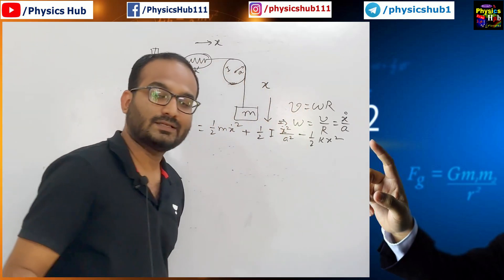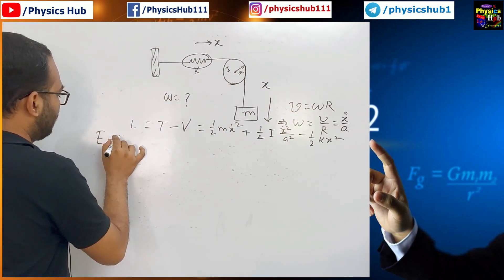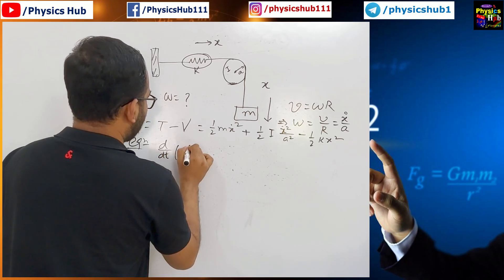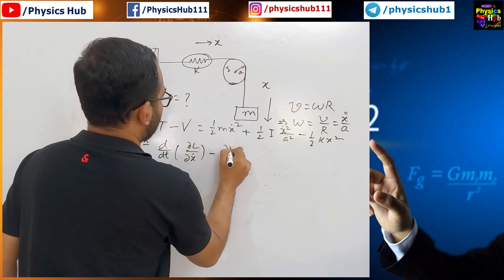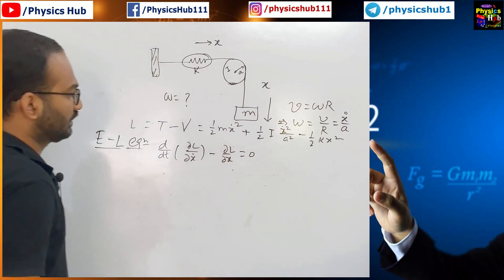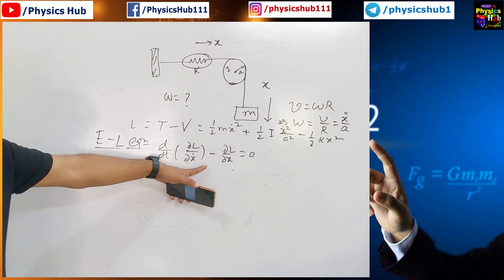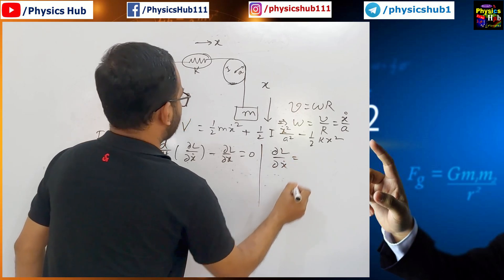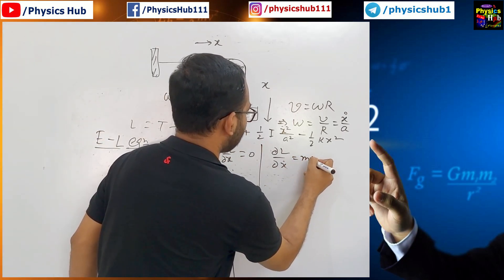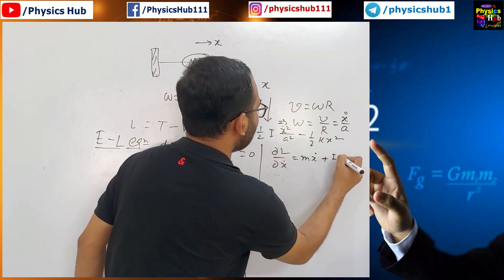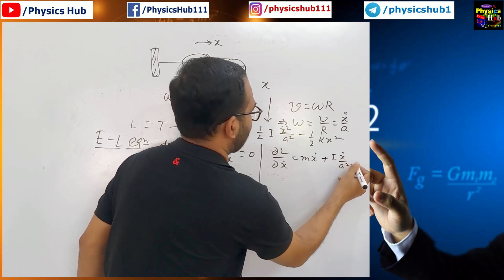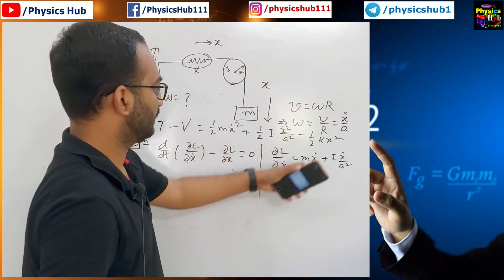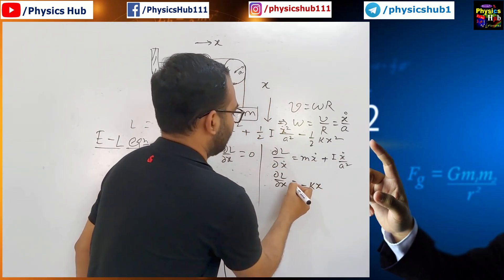So, once we calculate the Lagrangian, we can utilize the Euler-Lagrange equation. What is that Euler-Lagrange equation? D dt of del L del x dot minus del L del x equals zero. This is the Euler-Lagrange equation. But in this, you have two things to evaluate, del L del x dot and del L del x. So, let us calculate del L del x dot. So, if you take the derivative with respect to x dot, what you get? M x dot, one term will come from here plus I into x dot by A square. So, if you calculate del L upon del x, only this term will come, that is minus K x. So, we have got those values.